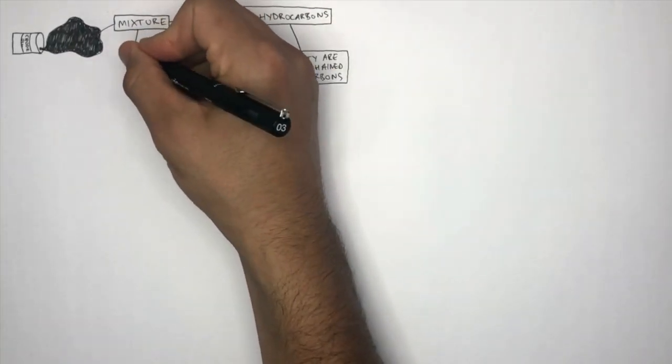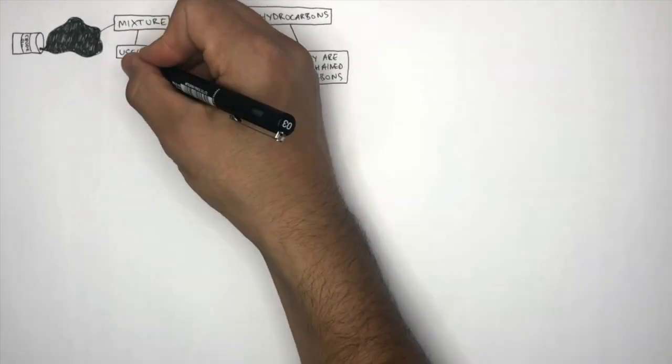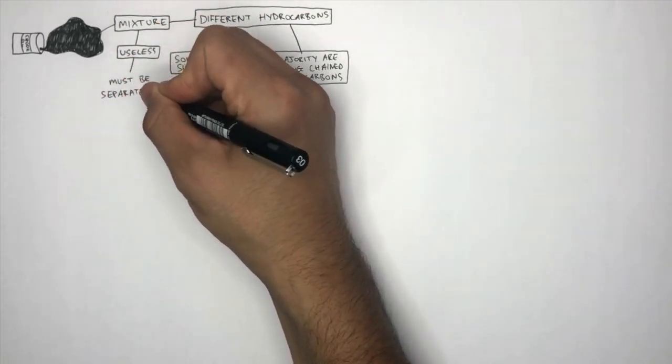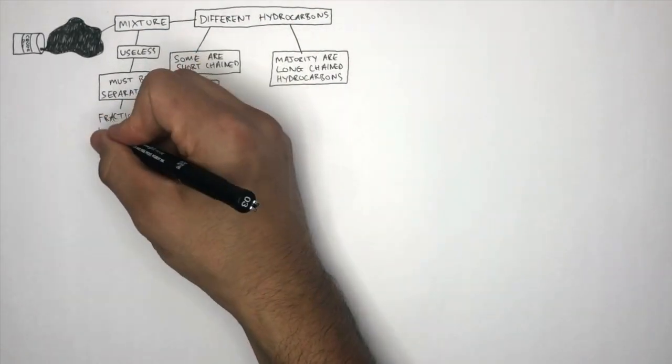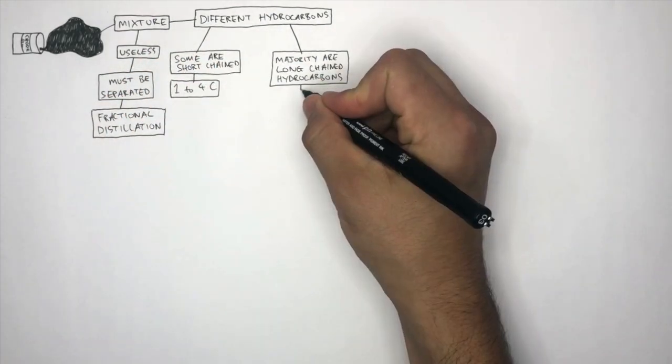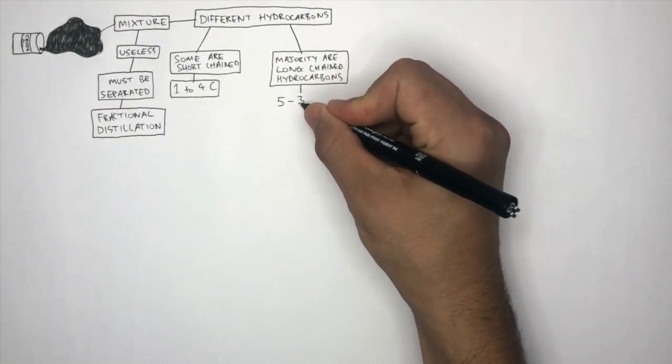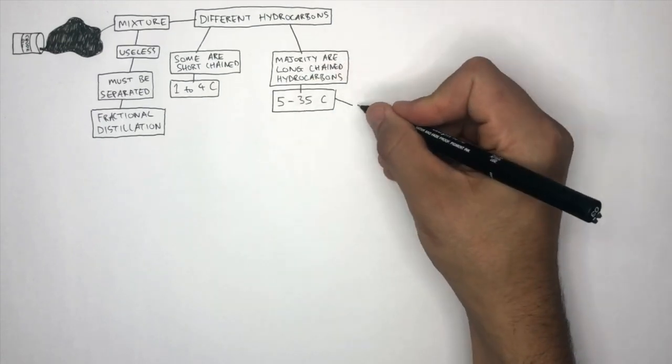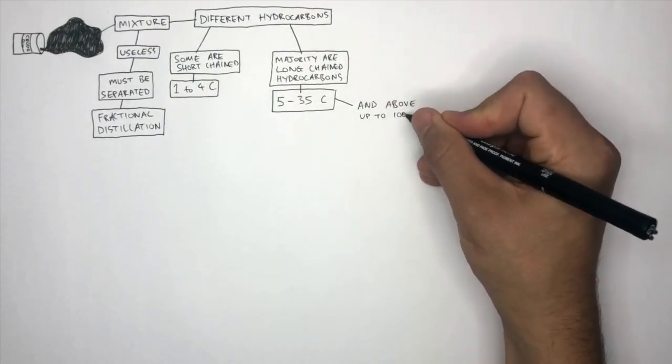Crude oil by itself is useless, therefore it must be separated and this is done using fractional distillation. Once separated, the long-chain hydrocarbons are between 5 to 35 carbon atoms and can be as big as above 100 carbon atoms.